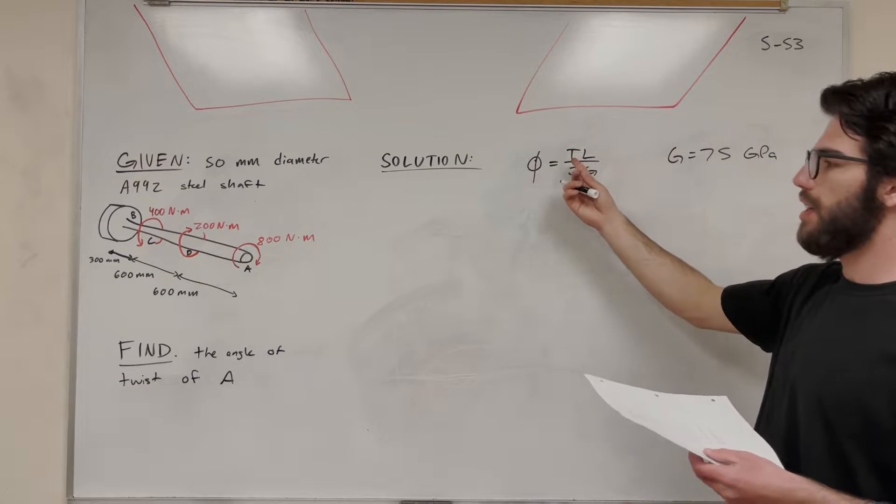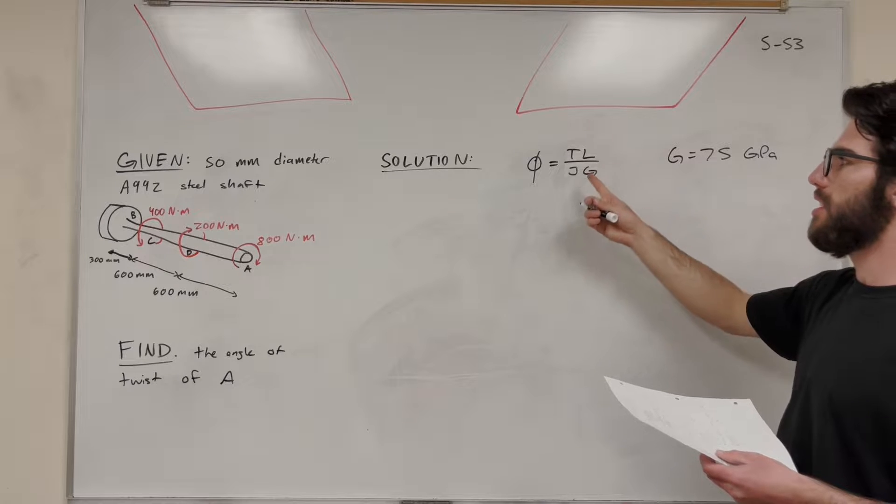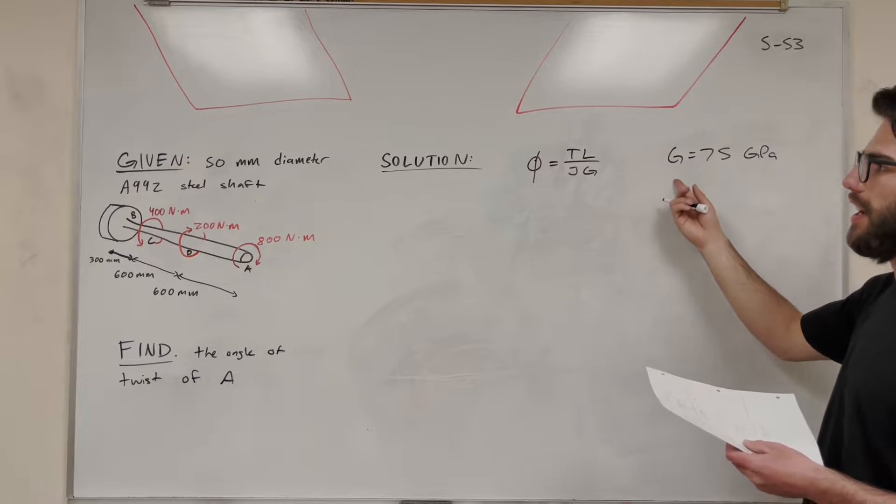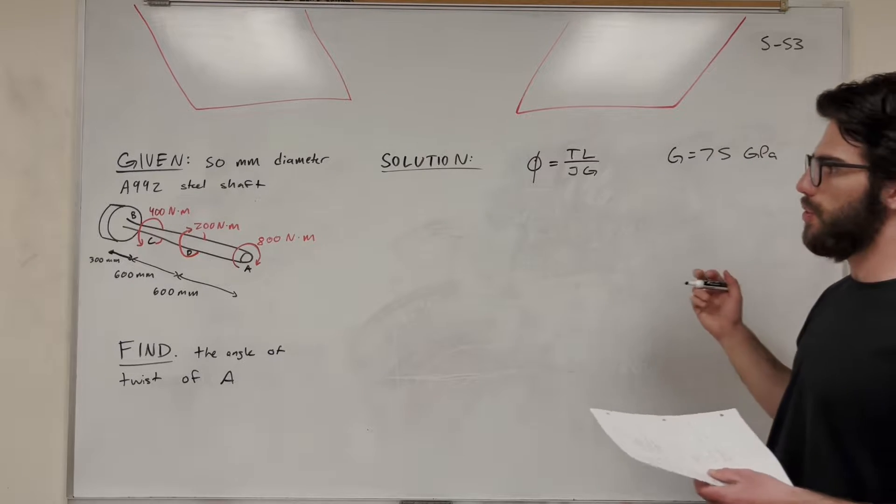So we need to find the torque, internal torque, in each one of those segments. We're given the length of each one of those segments. We're going to need to find the polar moment of inertia. And we're given G for this A992 steel shaft at 75 GPa. So let's find the torque for each one of these.